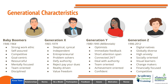Generation Y, or people born between 1980 and 1995, otherwise known as millennials, tend to be optimists. They appreciate immediate feedback and have shorter attention spans. This generation is connected 24/7 online or on their devices. They deal with authority, they're team-oriented, achievement-oriented, and confident.